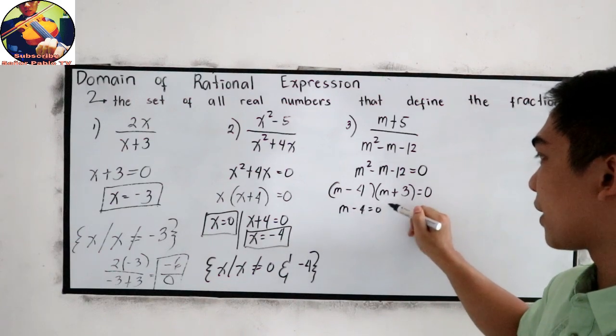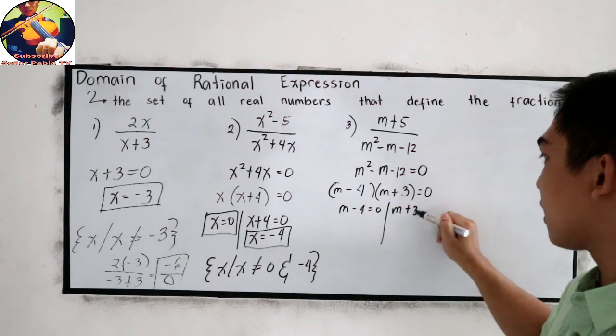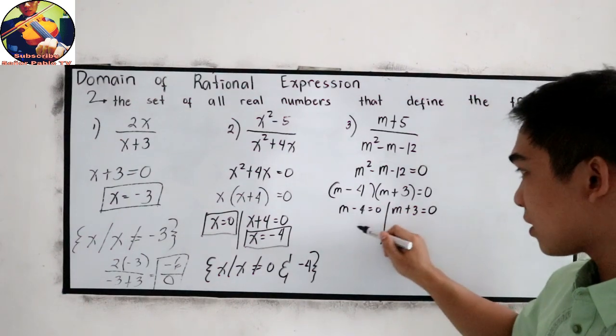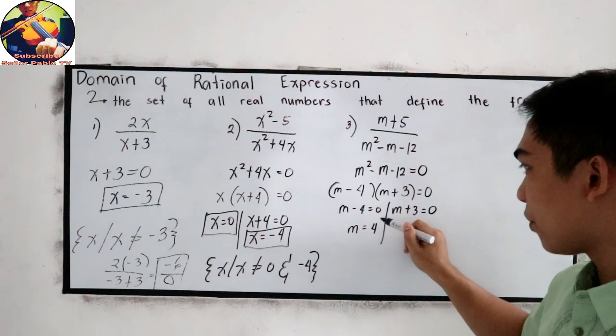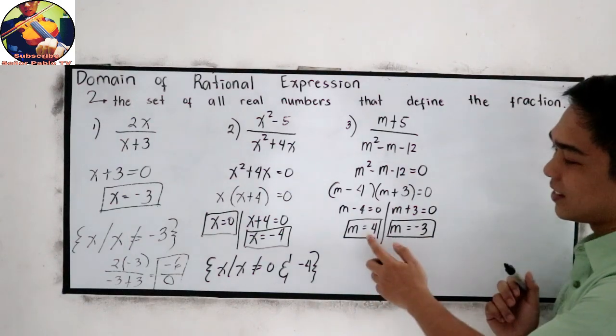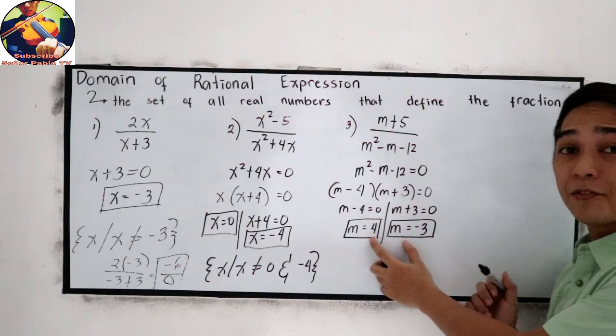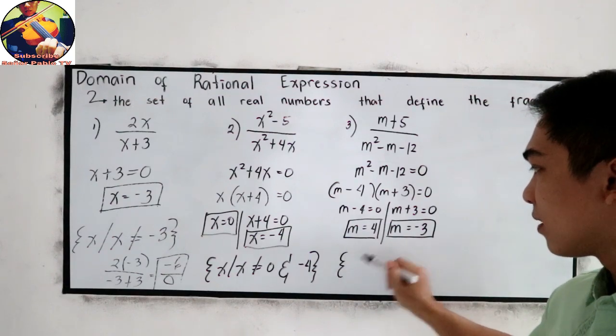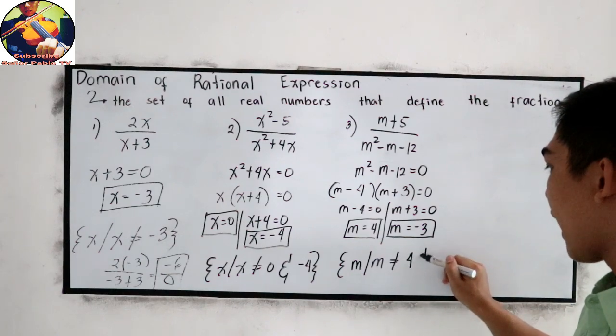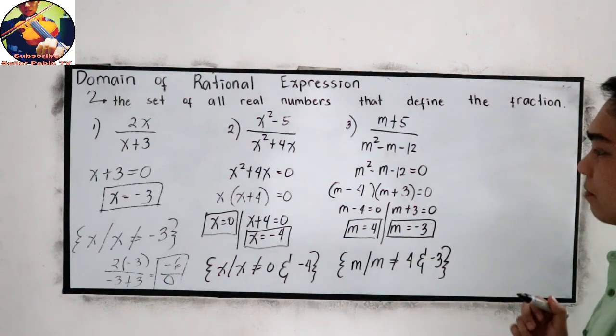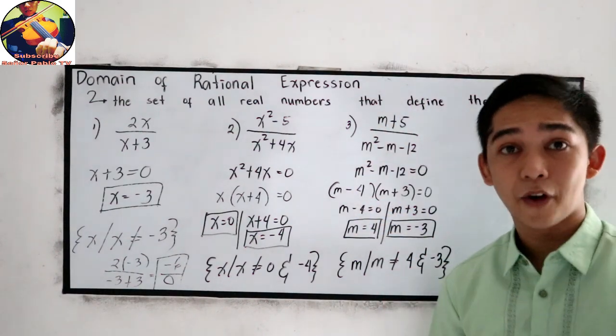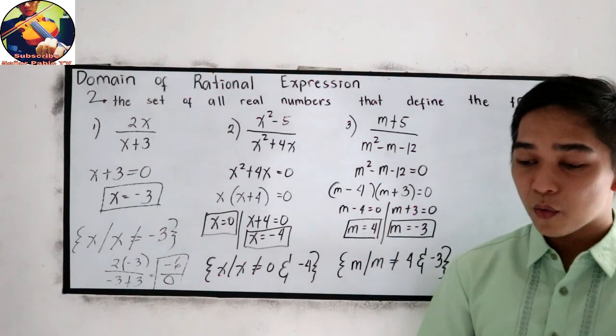m minus 4 is equal to 0, and m plus 3 is equal to 0. Then solve the values for m. Transpose, that will become m is equal to positive 4, and m is equal to negative 3. This is now our restricted values. So write our domain: m such that m is not equal to 4 and negative 3. Because if m is 4 and negative 3, the expression will become undefined.